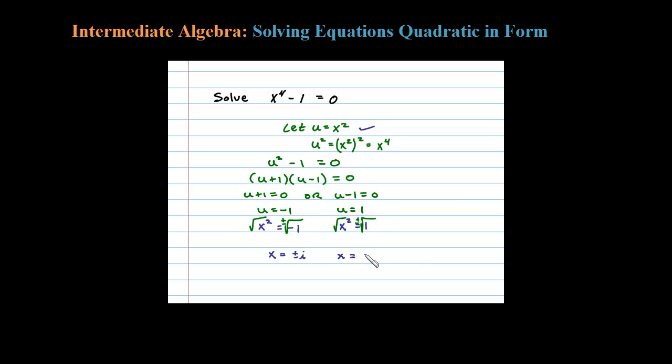Or x equals plus or minus the square root of 1, which is just 1. So we get two solutions for each one of those factors, leaving us with a total of four solutions: plus or minus 1 and plus or minus i. Four solutions to this equation.